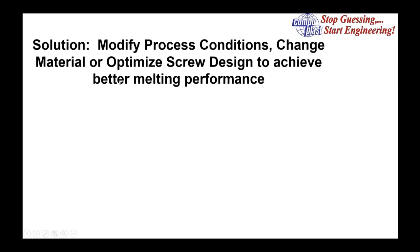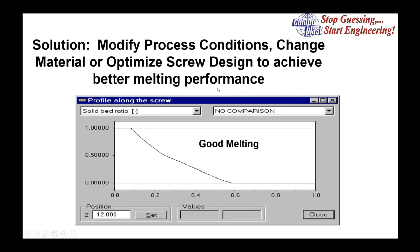Once this is understood, we simply modify the process conditions, change the material, or optimize the screw design to achieve better melting performance — so that the solid bed ratio continuously reduces to zero prior to the end of the screw, giving the material time to homogenize and produce a better quality melt. We want to see a solid bed ratio that looks more like this — a result of good melting.